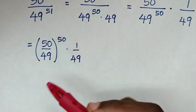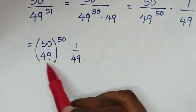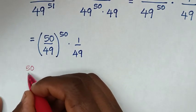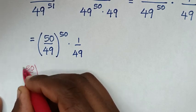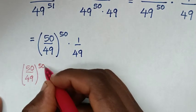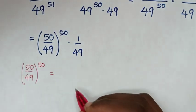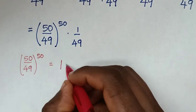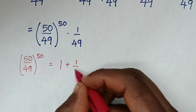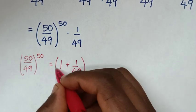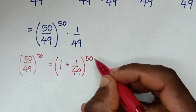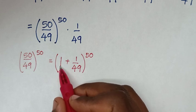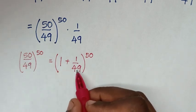In the next step, from here (50 over 49) bracket power 50, we rewrite this in Euler's form. So 50 divided by 49 is the same as 1 plus 1 over 49, since 49 plus 1 equals 50, all over 49.